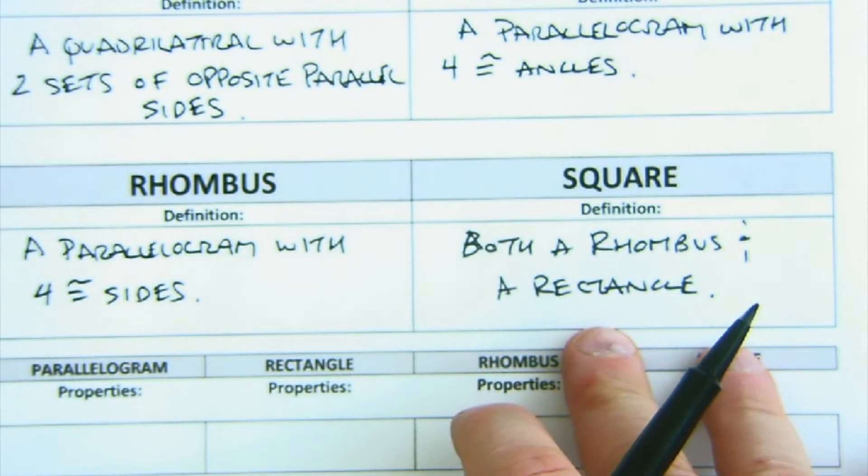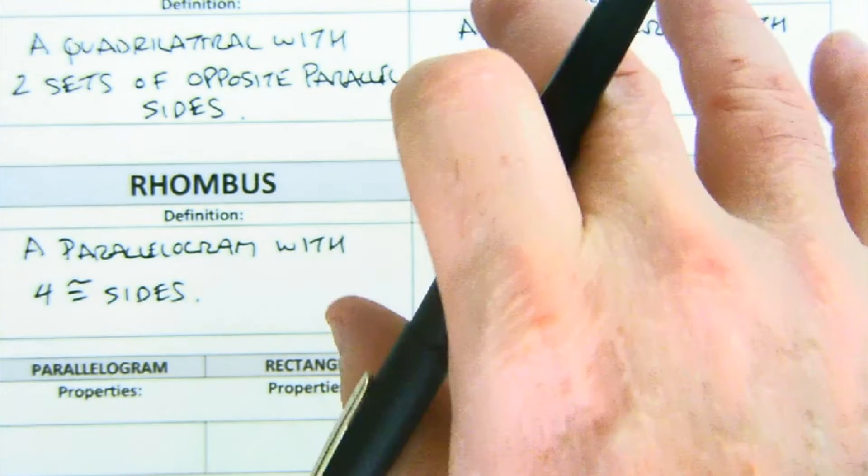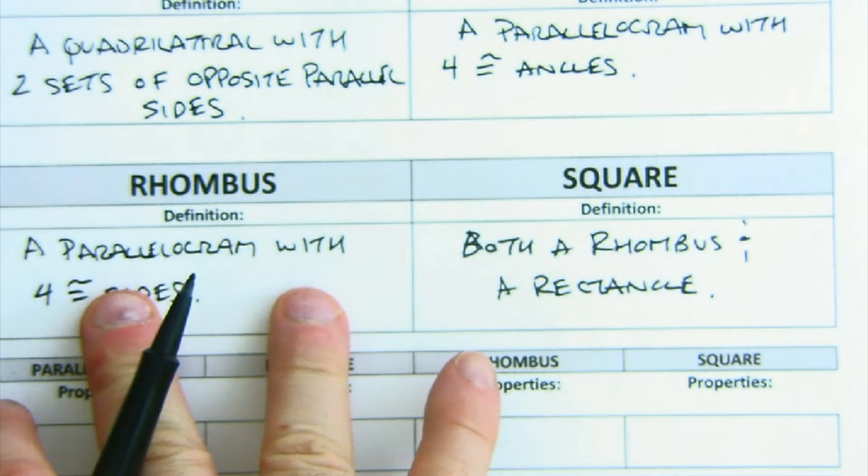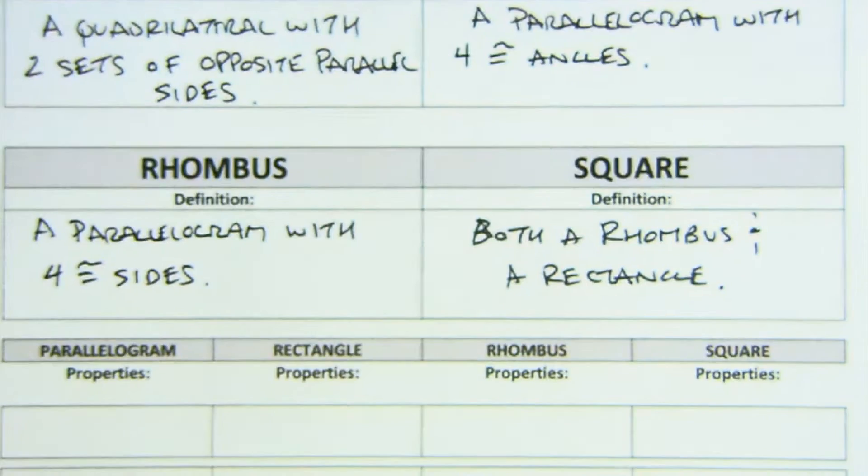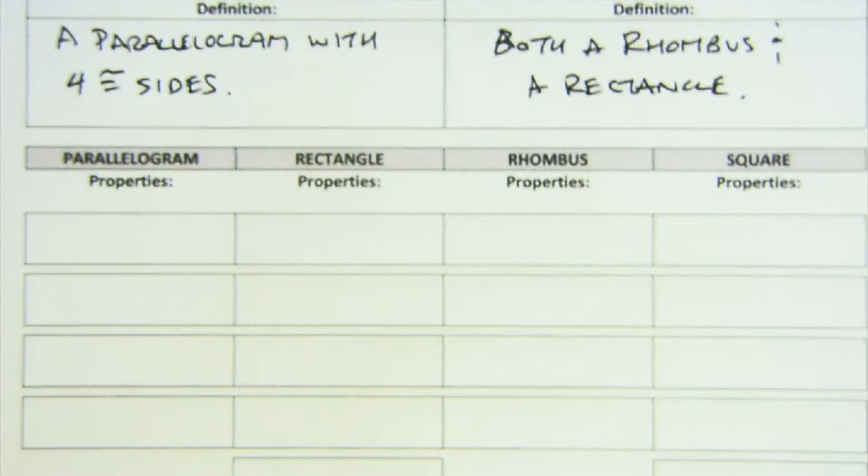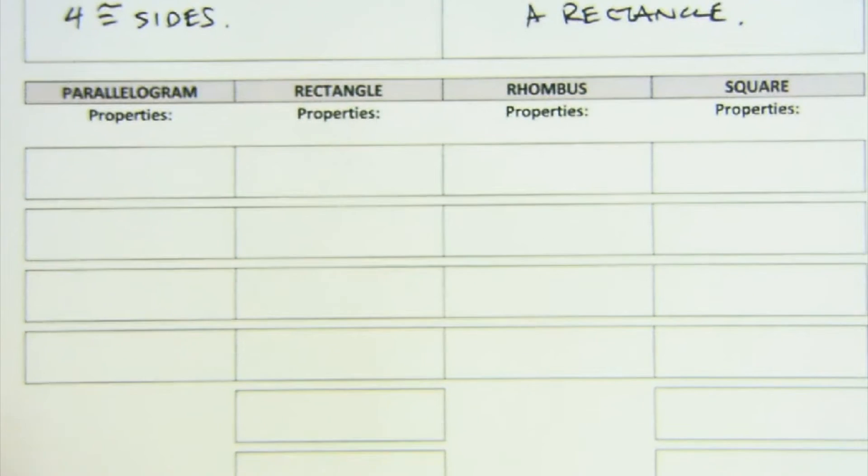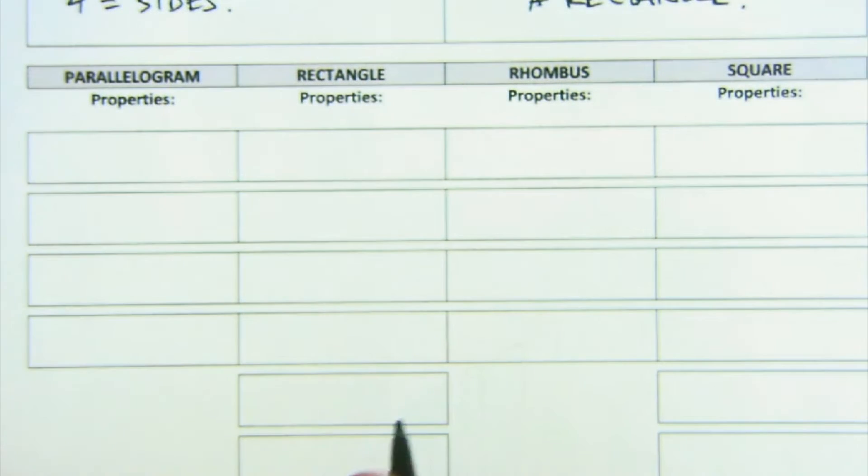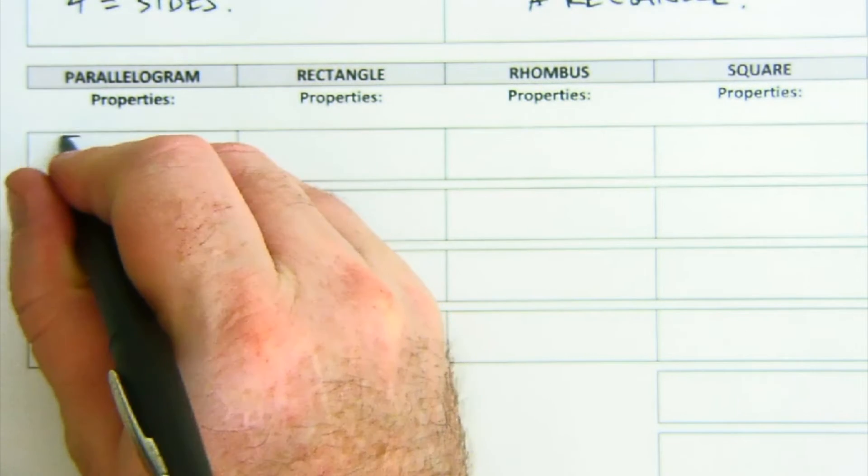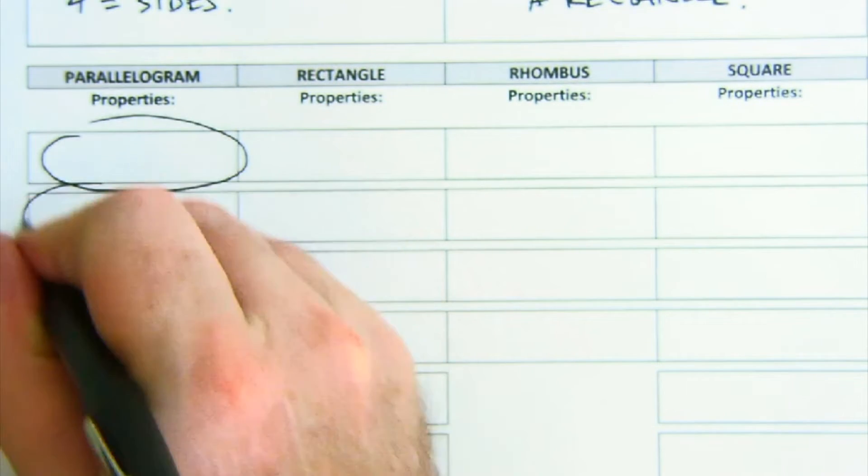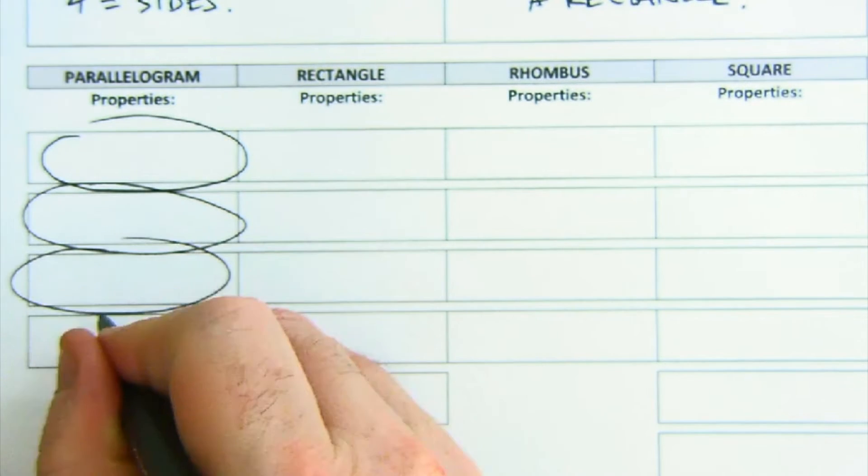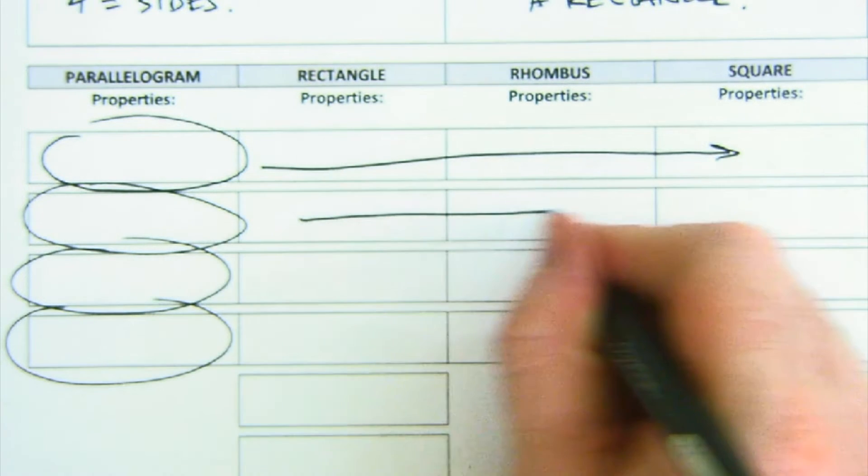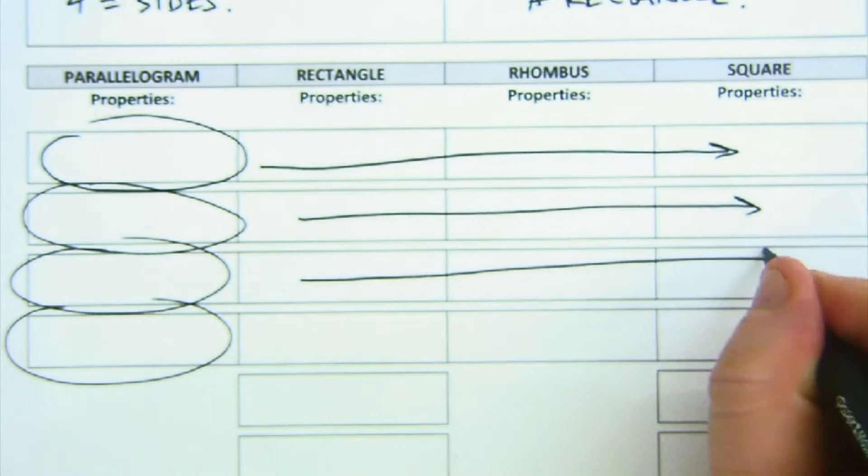A parallelogram with four congruent sides, and then square just ultimately is both the rectangle—four equal angles—and the rhombus—four equal sides. Now those definitions lead us to a lot of property concepts. Let me just talk to you about the big idea here.